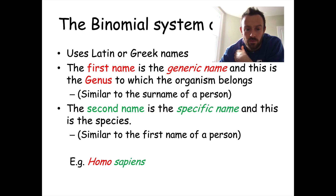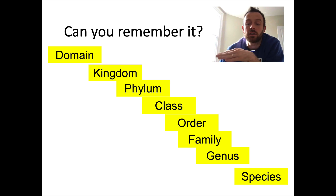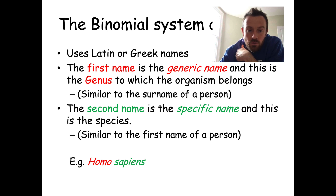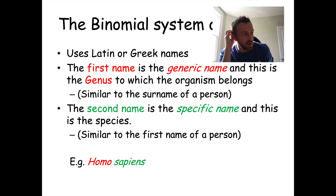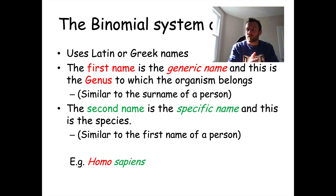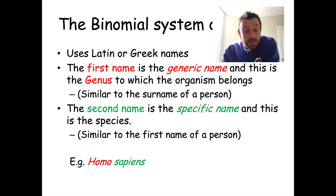In those last two levels — the genus and the species — we put them together to create something called the binomial name. All living species on our planet are referred to by two names which tell us the genus and the species, the last two levels of classification. It uses Latin or Greek names — this binomial system. The first name is the generic name, the genus to which the organism belongs — for example, Homo in Homo sapiens. It's kind of similar to the surname of a person. The second name is the specific name, similar to a first name. So we are Homo sapiens, and our distant extinct ancestor Homo neanderthalensis is no longer with us.